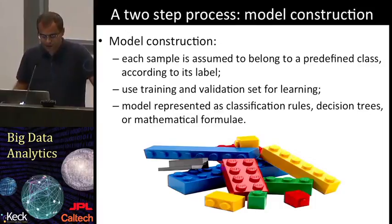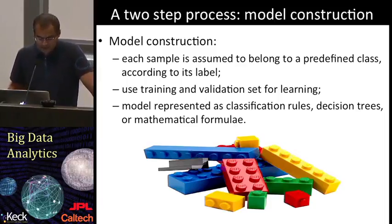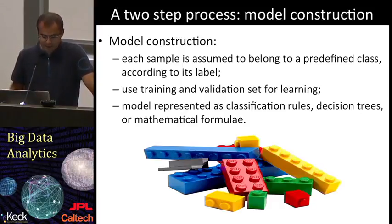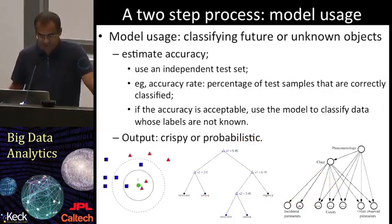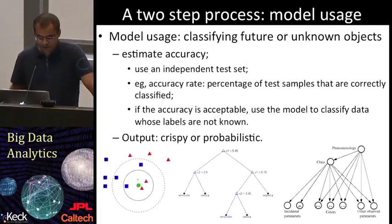Now let's see how classification works. We can describe it as a two-step process. First, we build the model, and then we use it. The first step is the learning process, in which we wish to learn a function that divides the data clearly into classes. Typically, this mapping is represented in the form of classification rules, decision trees, or mathematical formulas. In the second step, we use the model to do the actual classification on real data. We first need to assess its accuracy using an independent test set. Once we are satisfied with the accuracy reached, we can save the classifier and deploy it on new data whose labels are not known.